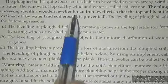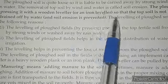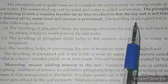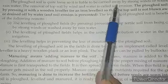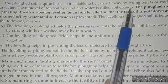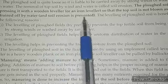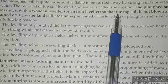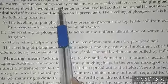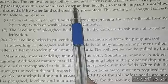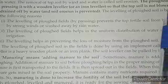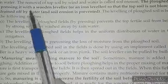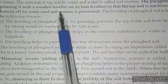Ploughed soil is quite loose, so it can be carried away by strong wind and washed away by rainwater. The removal of top soil by wind and water is called soil erosion. To prevent this, the ploughed soil is leveled by pressing it with a wooden leveler. This second process is called leveling.